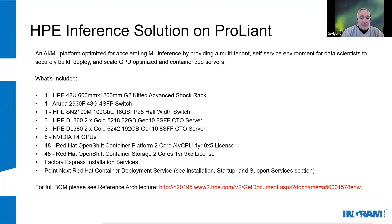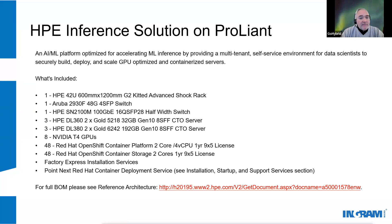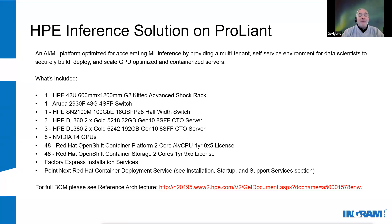HPE also offers a pre-configured inference solution on ProLiant, which is a 42U rack containing six ProLiant servers — three DL360 Gen10s and three DL380 Gen10s — along with all the network connectivity, installation and deployment services, and Red Hat OpenShift software, specifically configured to be an inference solution for your AI needs.